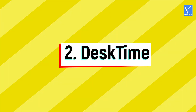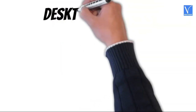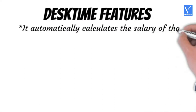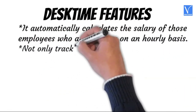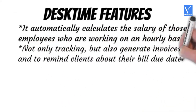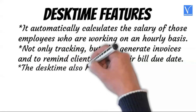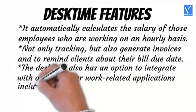Number two: DeskTime. DeskTime was built by Draugiem Group back in 2011. It is the best time clock for small businesses and one of the top software in the industry. It is a fully automatic tool to track the activities of employees. DeskTime features: it automatically calculates the salary of employees working on an hourly basis. Not only tracking, but DeskTime also has a feature to generate invoices and remind clients about their bill due dates.